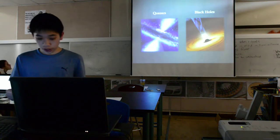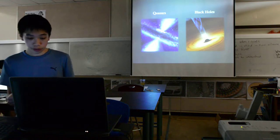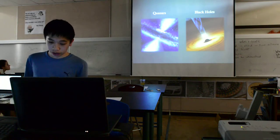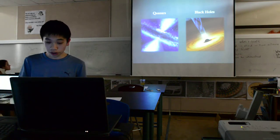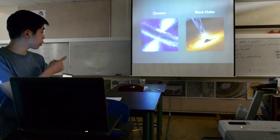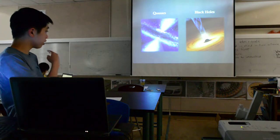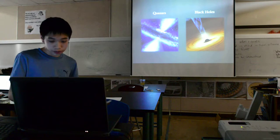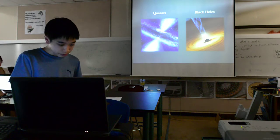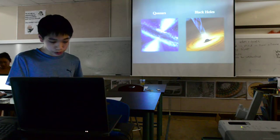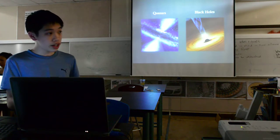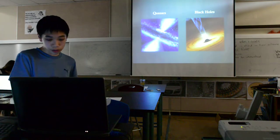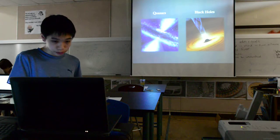Radio telescopes listen to the radio waves emitted by extraterrestrial sources such as stars, quasars — which is on the left — and black holes, which is on the right. These extraterrestrial sources all emit radio waves which can be seen through the radio telescope.